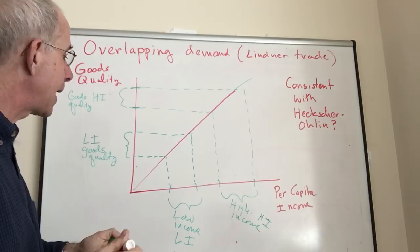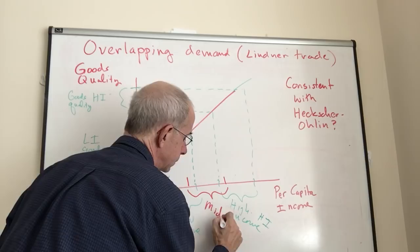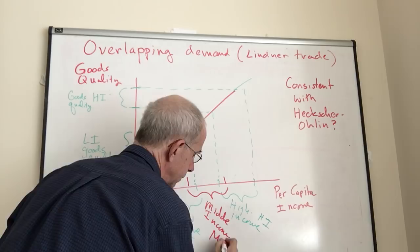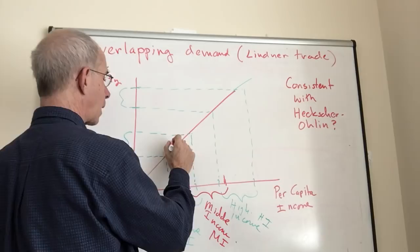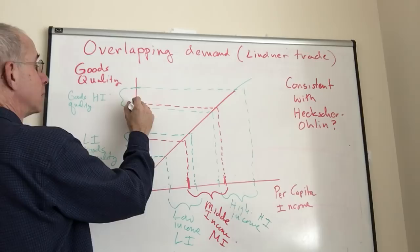Now imagine a middle income country which has an intermediate level of income, and they have a range of goods quality for them.